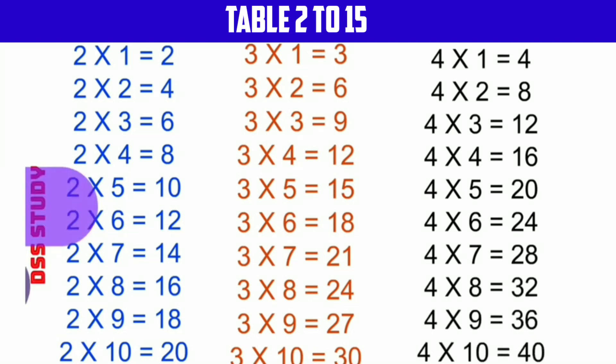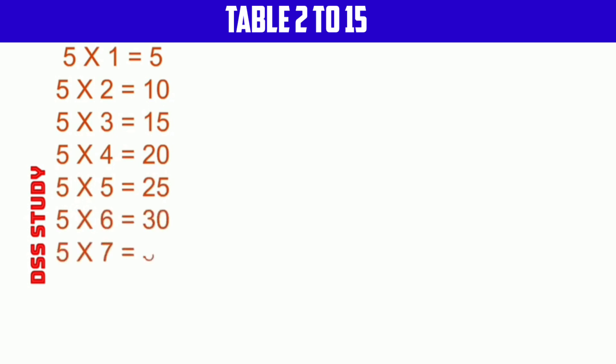5 times 1 is 5, 5 times 2 is 10, 5 times 3 is 15, 5 times 4 is 20, 5 times 5 is 25, 5 times 6 is 30, 5 times 7 is 35, 5 times 8 is 40, 5 times 9 is 45, 5 times 10 is 50.